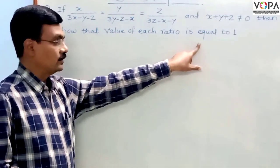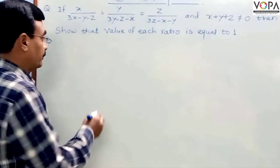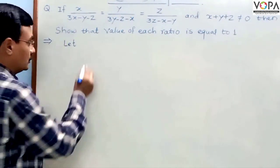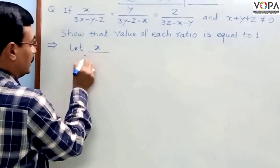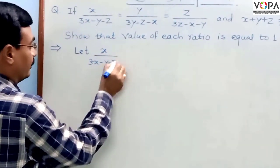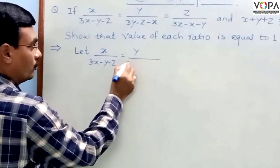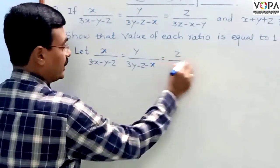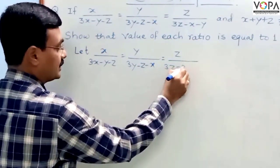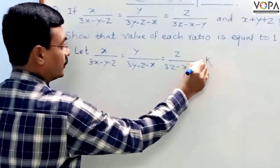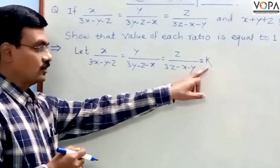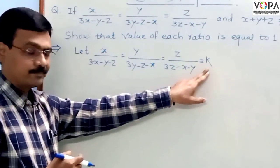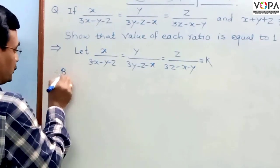This example can be solved by using the theorem of equal ratios. Let us assume that each of the ratios has the value k. So, x upon (2x minus y minus z) equals y upon (2y minus z minus x) equals z upon (2z minus x minus y) equals k. We assume k as a constant.